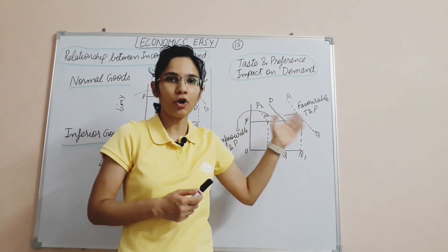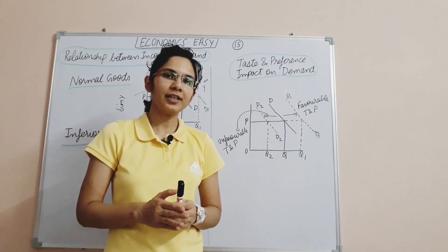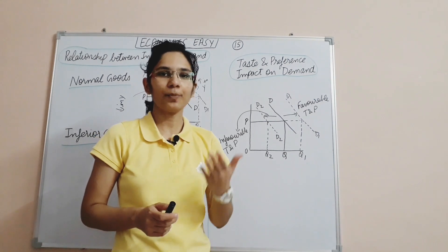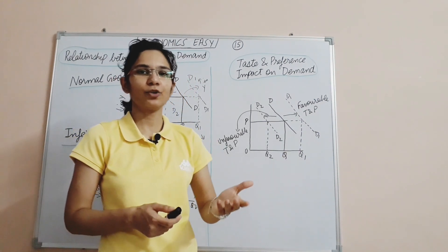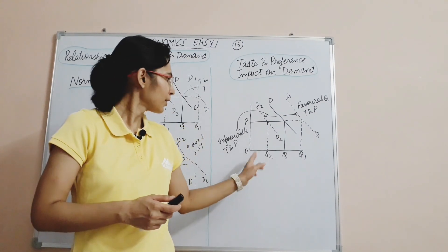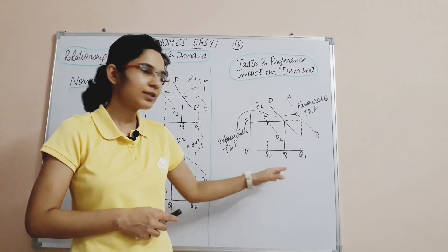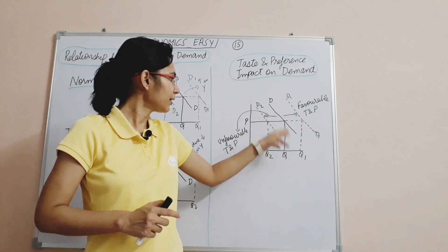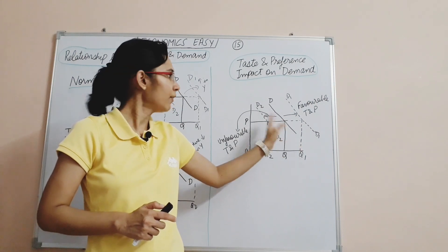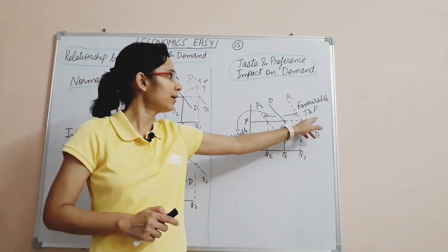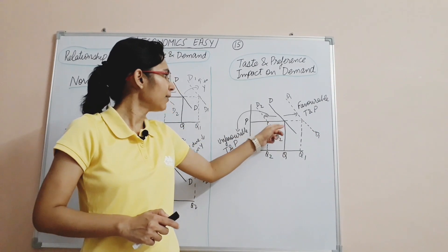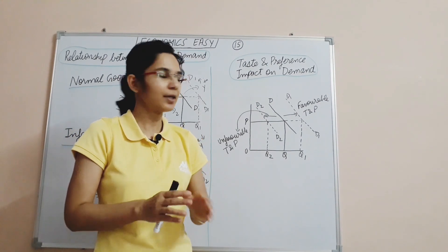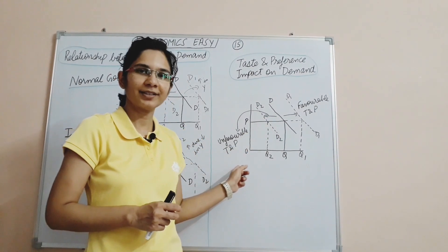Taste and preference also impact demand. If someone likes something, they will buy more of it at the same price — the demand curve shifts rightward to D1-D1 reflecting favorable taste and preference. If they don't like it, they will buy less — the demand curve shifts backward to D2-D2, reflecting unfavorable taste and preference.